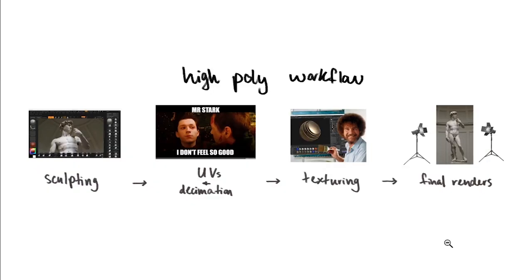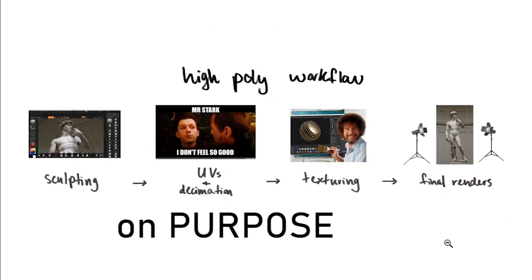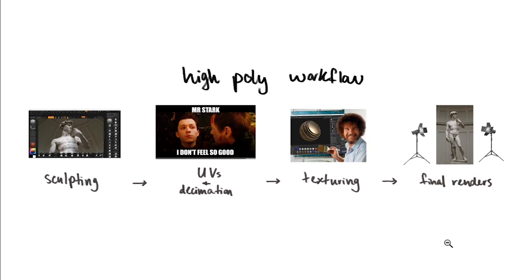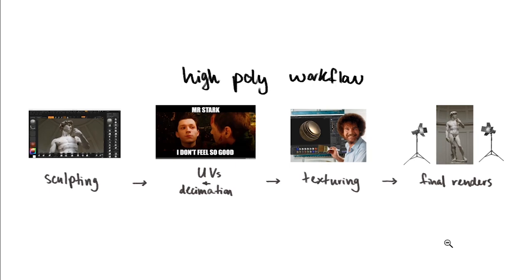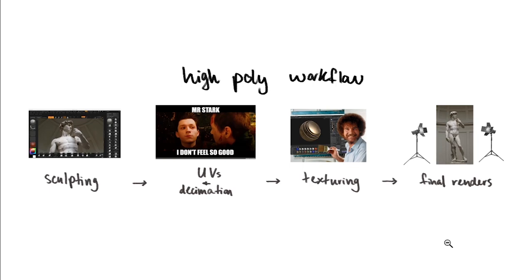Then instead of doing retopo and UVs, you do UVs and decimation — and that order is on purpose because that's the order in which you need to do it. You shouldn't do UVs after decimating because the topology in ZBrush doesn't allow you to — and I am potentially speaking from personal experience on that one. So you UV your model with its nice clean topology, then you hit that decimation button. There's an option in Decimation Master to keep your UVs of each subtool in ZBrush. Once you've done that, you effectively have a low-ish poly model that you can take into your texturing program of choice.